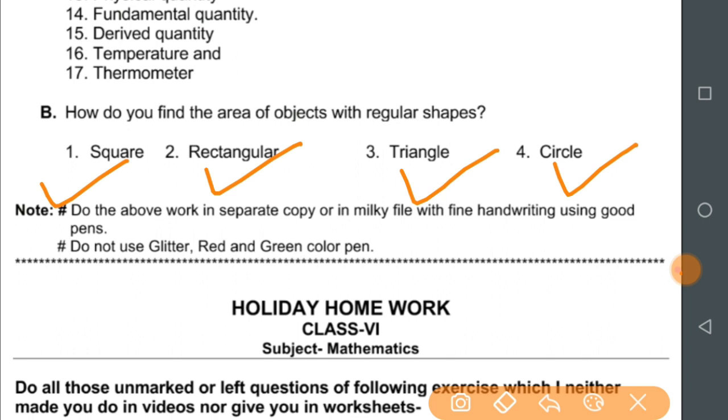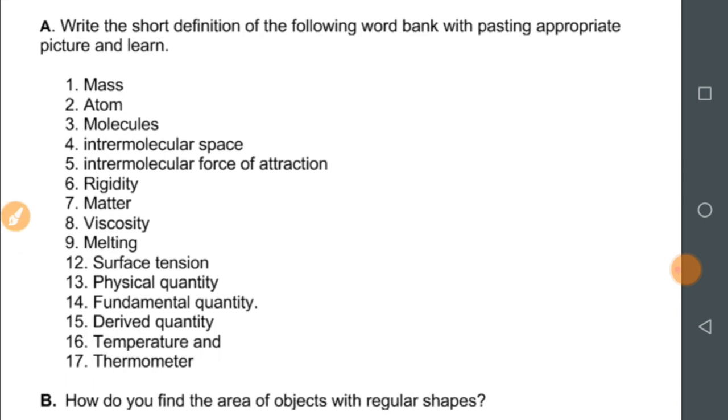And in the first question, some terms are given as you can see here: mass, atom, molecules, intermolecular space, rigidity, matter, viscosity, melting, surface tension. You have to define these terms within two or three lines.